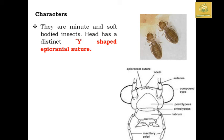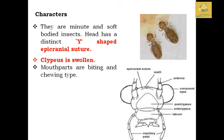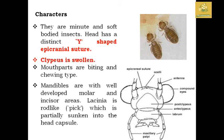The head has a big Y-shaped epicranial suture. The ocelli are small and bulge-type. The mouthpart is chewing type with very well-developed mandibles. The maxillary structures in the middle region are also fully developed, with rod-like structures and tilted head capsules.